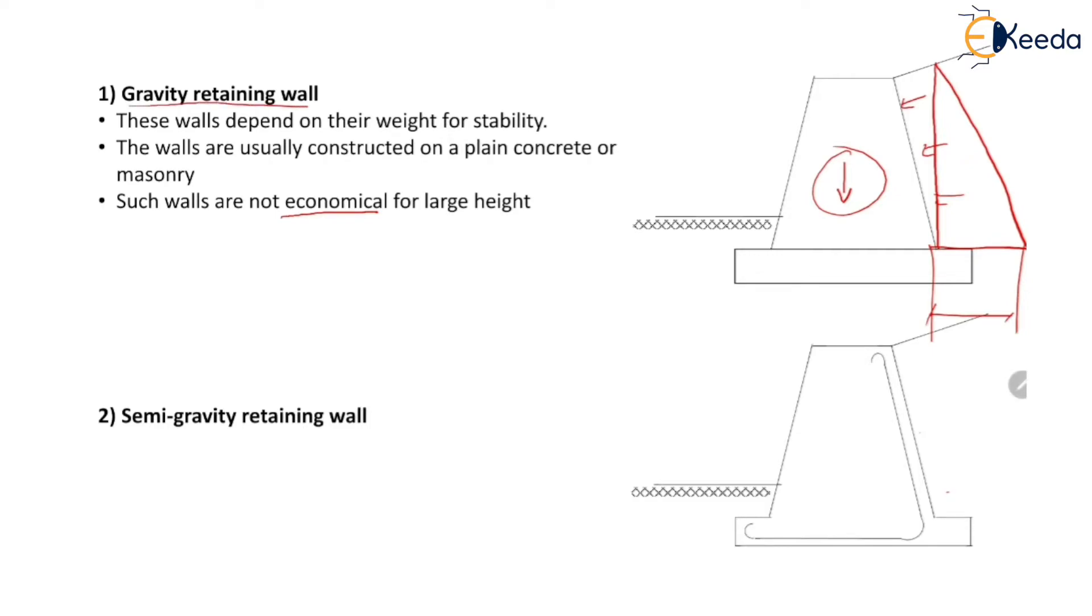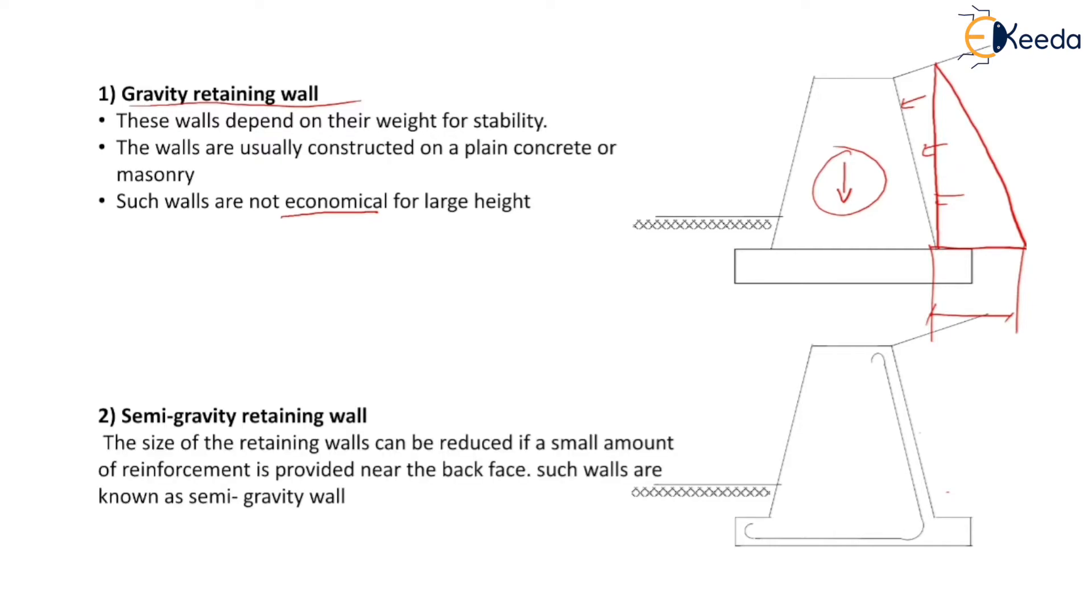In case of a purely gravity retaining wall, we require more material to add more weight to achieve stability. But the size of this retaining wall can be reduced if a small amount of reinforcement is provided near the back face.